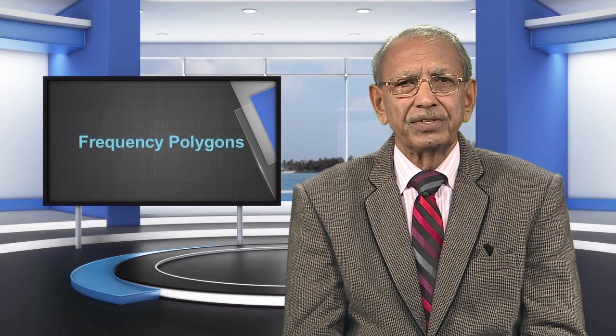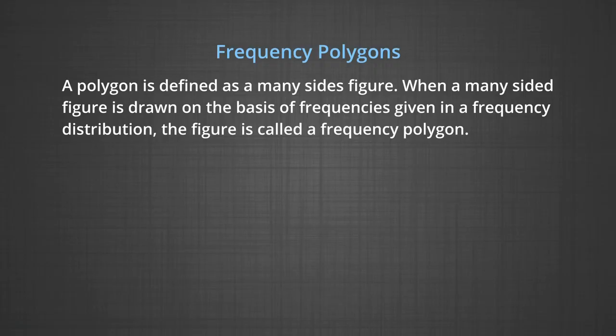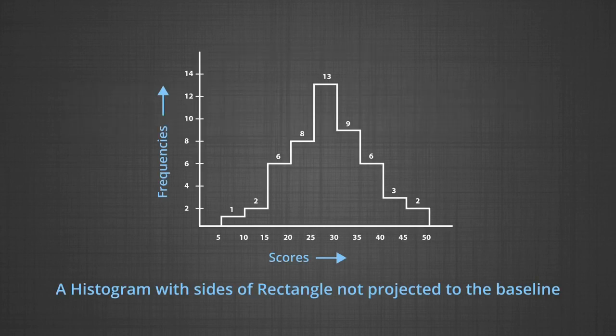Now we discuss frequency polygons. A polygon is defined as a many-sided figure. When a many-sided figure is drawn on the basis of frequencies given in a frequency distribution, the figure is called a frequency polygon. Figure two is a histogram with sides of the rectangles not projected to the baseline, based on our data in table one.